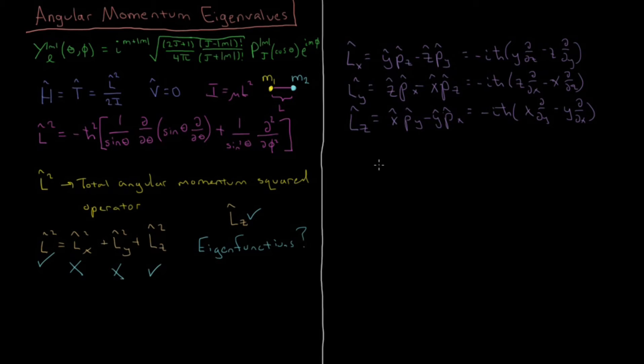But this is in Cartesian, and we've been dealing with spherical polar coordinates for this entire model system. So we want Lz in spherical polar coordinates. And if you do the transformation between Cartesian and spherical polar, you'll see very conveniently that LZ just becomes minus IH bar, d/d phi.